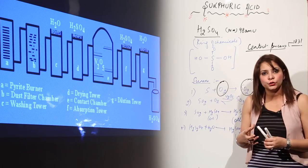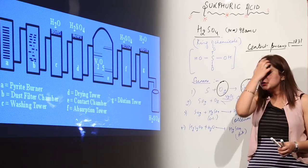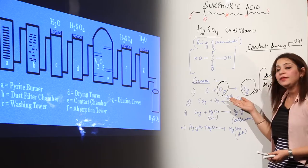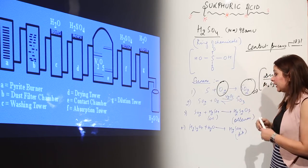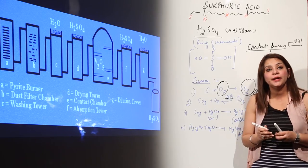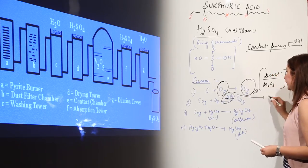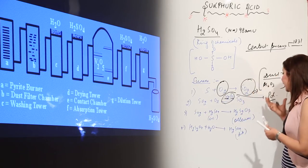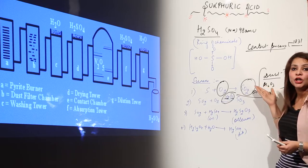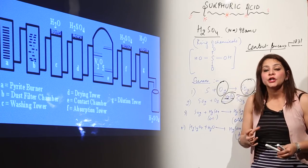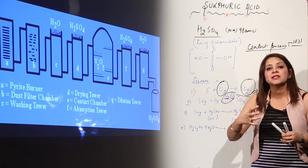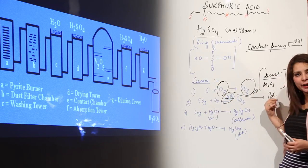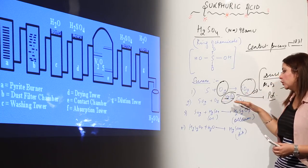We need to purify the SO2 first. After purification, it reacts with oxygen in the presence of vanadium pentoxide (V2O5) to give SO3. We could also use palladium as a catalyst, but palladium combines with the arsenic oxide impurity — meaning the catalyst gets poisoned. To avoid this, we use vanadium pentoxide instead.